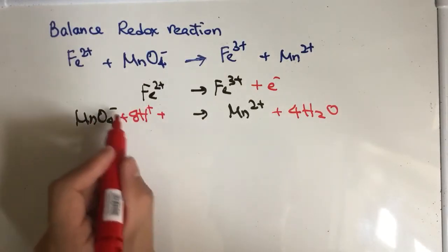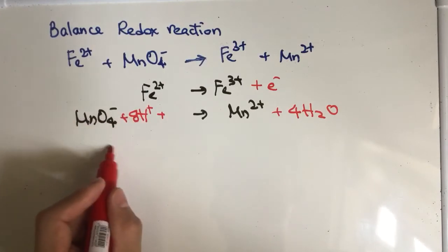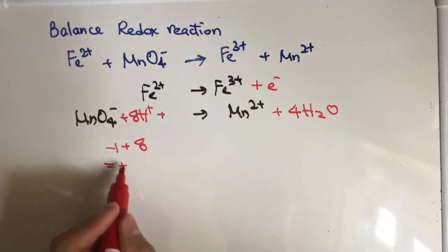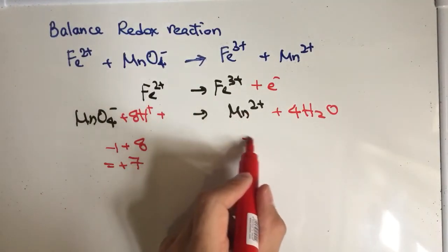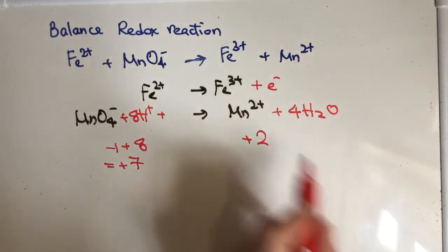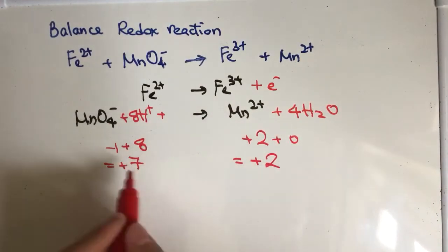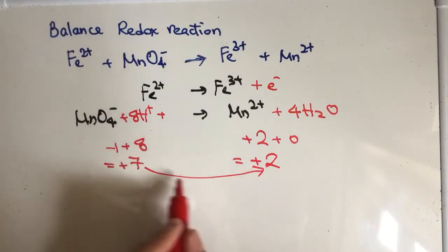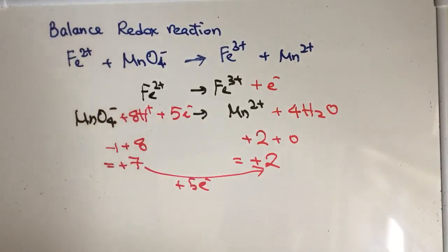So on the reactant side here, we have seven positive. Minus one plus eight is equal to seven positive, right? And on the product side, only have positive two. And this is zero. Positive two plus zero becomes positive two. And how can we balance it? We can add five electrons. So for the reactant side here, add five electrons. And this is the ionic half-equation of permanganate ion.